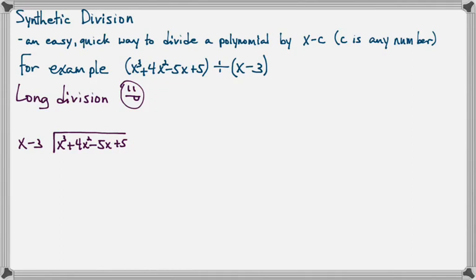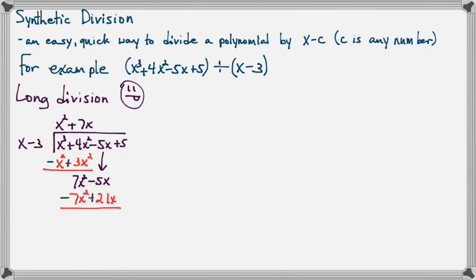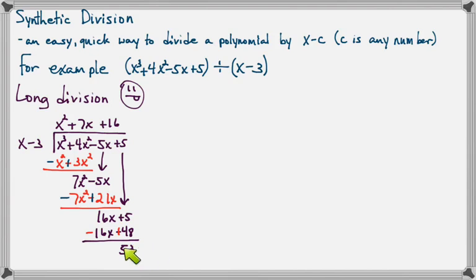If you've not been through this before, we're not going to actually be using this process — I just wanted you to see what we're avoiding. So you make a guess as to how many times x will go into x to the third, and that's x squared. We multiply back, change signs, and add, then pull down and make another guess. How many times will x go into 7x squared? That's 7x. Multiply back, change signs and add, pull down, and make another guess. How many times will x go into 16x? That'll be 16. Multiply back, change signs and add, and the remainder is 53. So we make a mixed term of 53 over x minus 3, and that is our quotient.